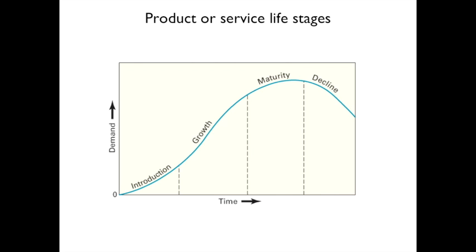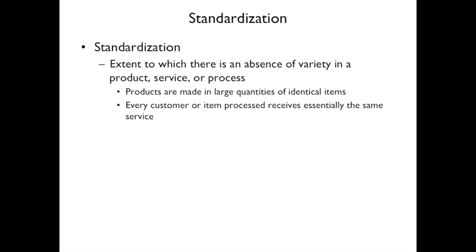The stages of a product or service start with introduction, then growth — which tends to be fast — then maturity where demand peaks, and then decline. The decline is typically because a new product comes along to replace it. We call that disruptive technology.